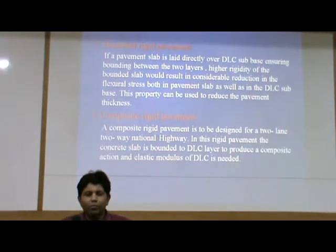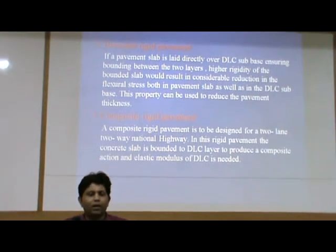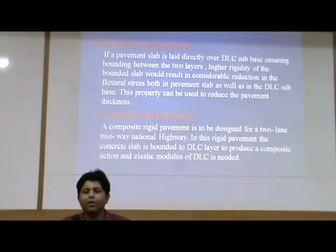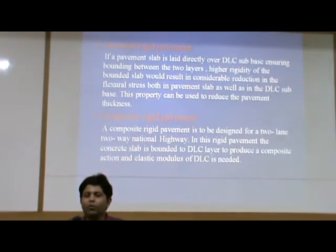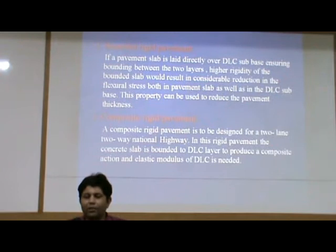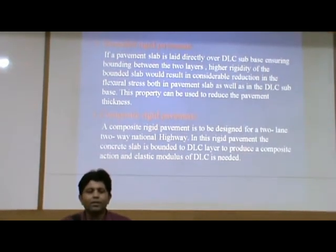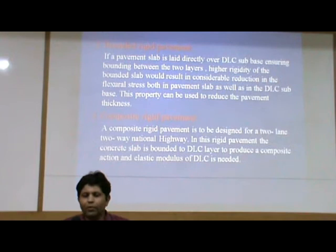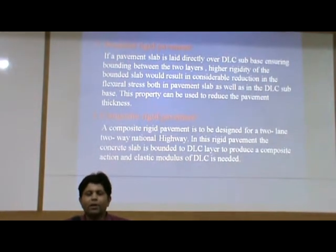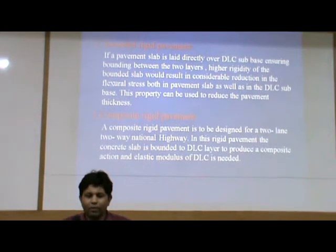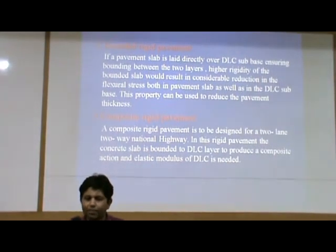Then number three, composite rigid pavement. A composite rigid pavement is designed for a two-lane two-way national highway. In this rigid pavement, the concrete slab is bonded to the dry lean concrete layer to produce a composite action, and the elastic modulus of dry lean concrete is needed.